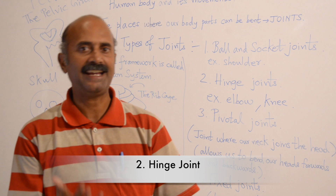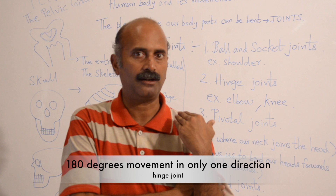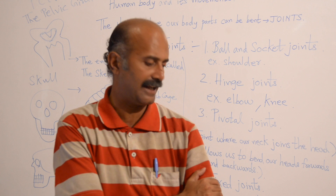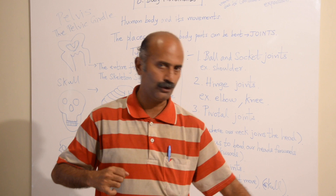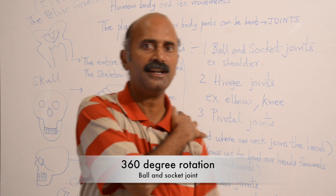Now we study the hinge joint. Hinge joint means, for example, elbow and knees. Hinge joints are those joints which only allow 180-degree movement in only one direction. For example, elbows — no matter what you do, you can only bend in this direction; you can never bend elbows in the other direction. For a ball and socket joint, a complete 360-degree rotation is possible.